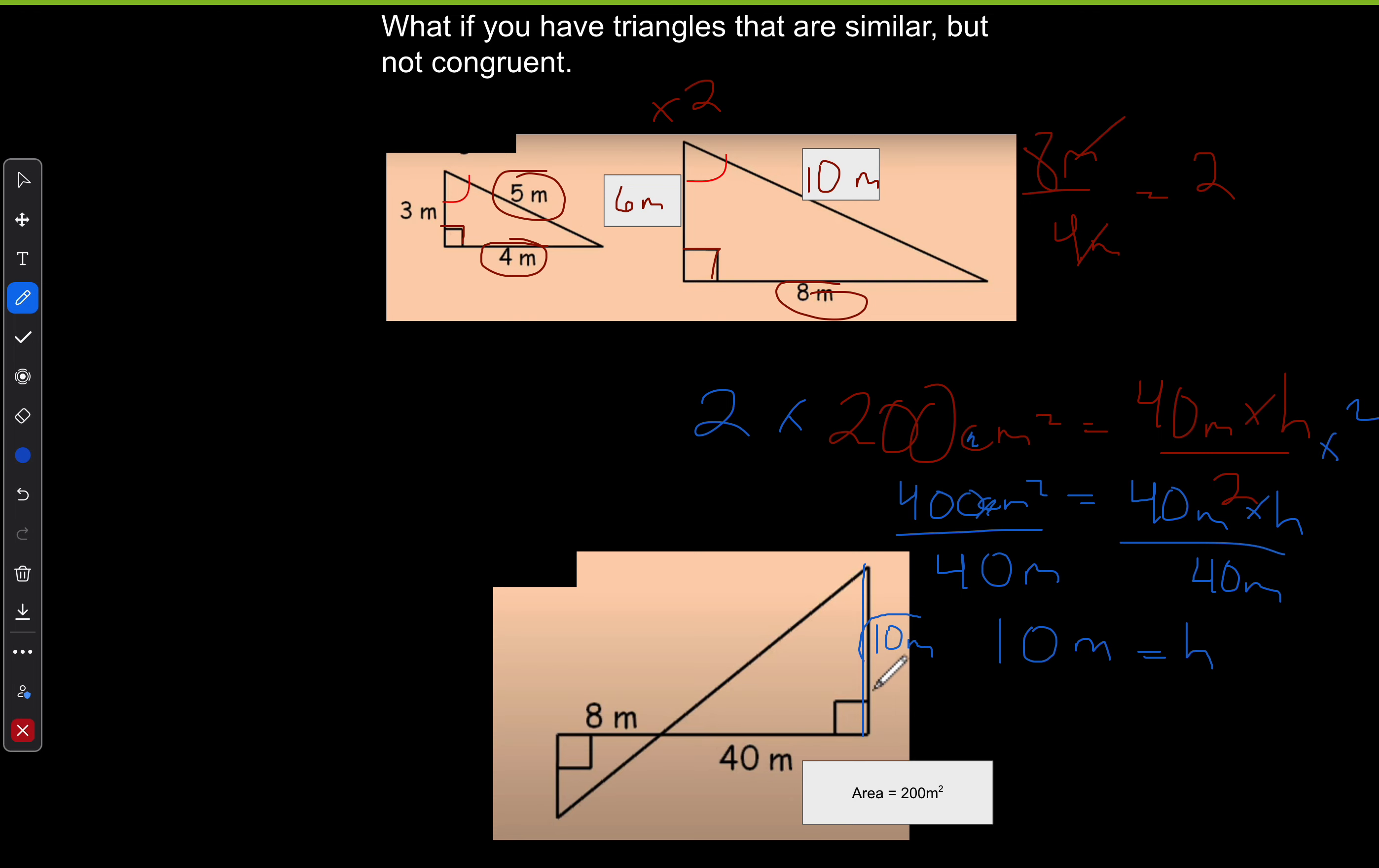Now, how does this help me find this side length here? Well, if I look at 40 and eight, 40 divided by eight equals five. So I should be able to use the scale of five to find this side length.